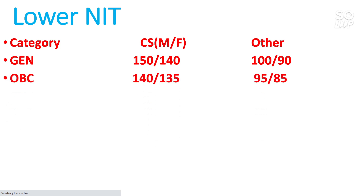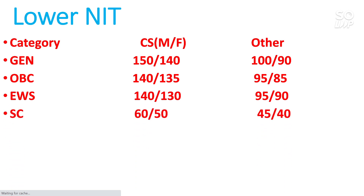For lower NITs, OBC category needs 140 for male, 135 for female for CS, and 95 for male, 85 for female for other branches. EWS needs 140 for male, 130 for female for CS, and 95 for male, 90 for female for others. For SC: 60 for male, 50 for female for CS, and 45 for male, 40 for female for other branches. For ST: 55 for male, 45 for female for CS, and 40 for male, 35 for female for other branches.